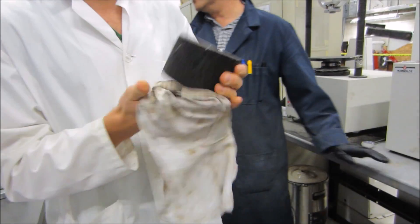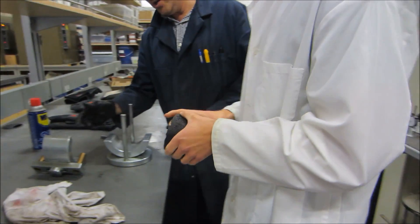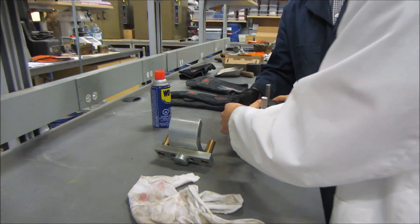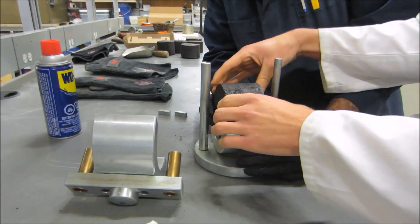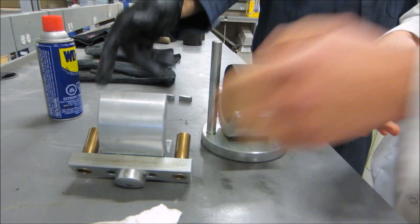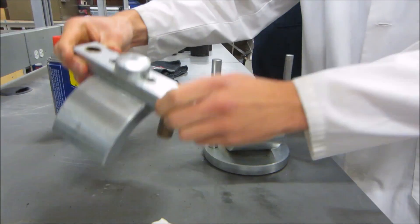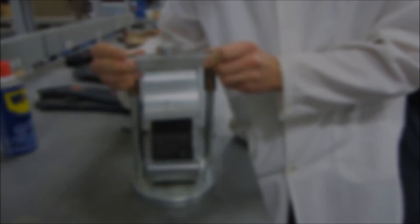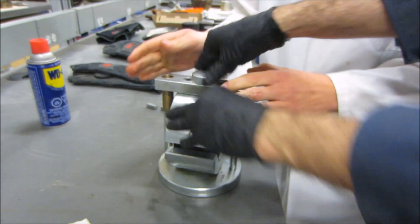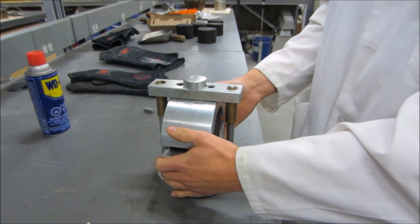After coating the inside surface of your breaking head with WD-40, place your specimen in the lower section of the breaking head, making sure to center it appropriately. Then place the upper section on top. Once the upper section has dropped, make sure to give it one last final push.